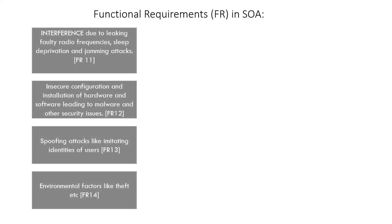For any architecture, we have requirements. For the physical layer, the requirements to address include interference due to leaking or faulty radio frequencies, insecure configuration and installation of hardware, spoofing attacks, and environmental factors. All of these can be found in the physical layer and must be avoided.